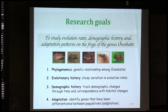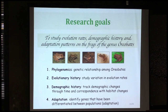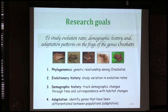The research goals of my thesis: the main goal is to study the evolution rates, demographic history, and adaptation patterns in the frogs of the genus Oriobates. I have subdivided this into four stages. The first stage is to create a phylogenomic tree to study relationships among Oriobates. The second is to study evolutionary history, meaning variation in evolutionary rate. The third is demographic history, tracking demographic changes through time. And finally, the fourth is about adaptation — identifying genes differentiated between populations.